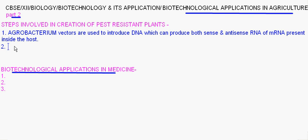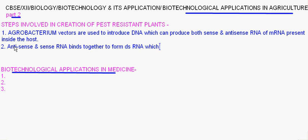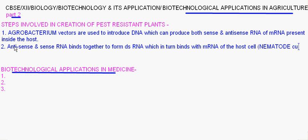Next step: the sense and antisense RNA bind together to form double-stranded RNA, which in turn binds with the mRNA of the host cell — that is, the nematode causing disease in the plant. So here, 'host' means the pest.